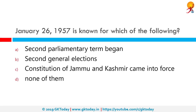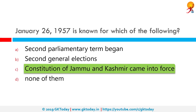January 26, 1957 is known for which of the following? Correct answer is: the Constitution of Jammu and Kashmir came into force. On 15 February 1954, the Assembly members who were present cast a vote ratifying the state's accession to India. And on 26 January 1957, a constitution was drafted which came into force in the state.